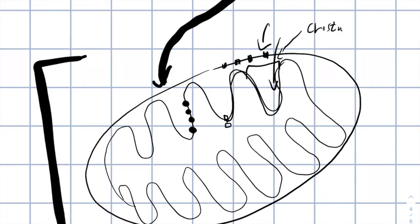The place that you can find between the outer and inner membrane is called the intermembrane space, and the place you can find inside the mitochondria, inside the inner membrane, is called the matrix.